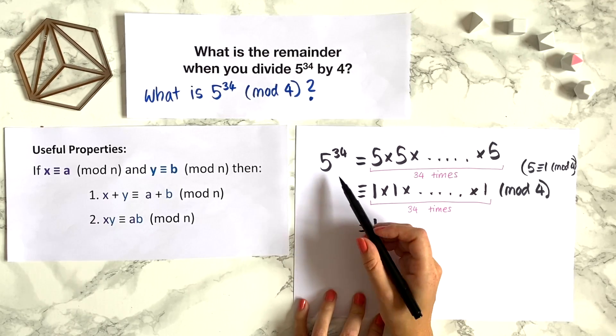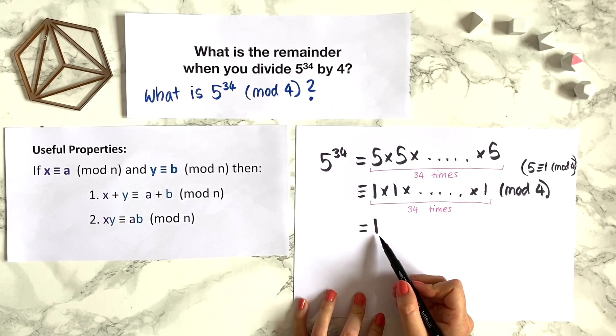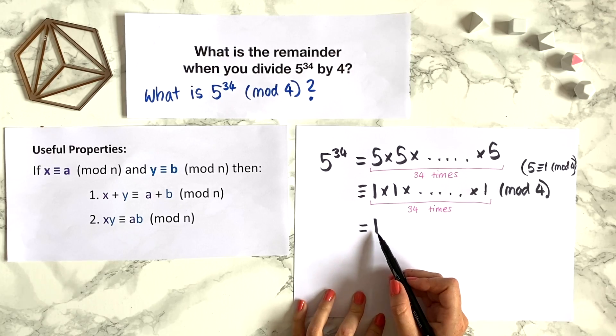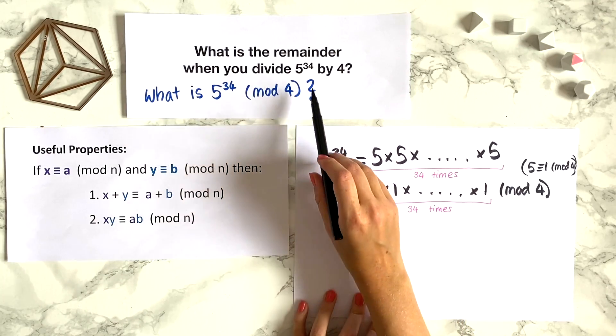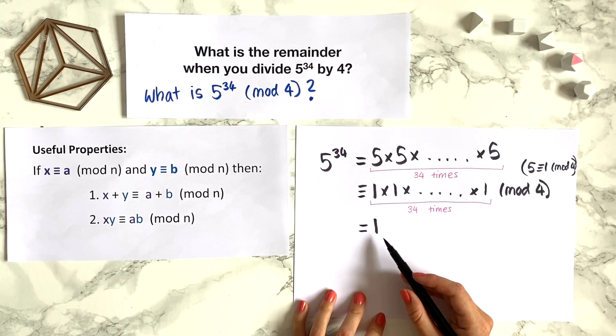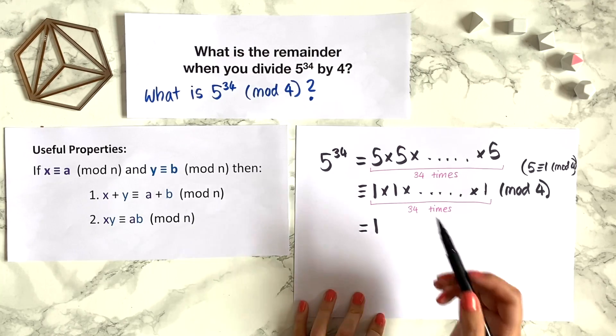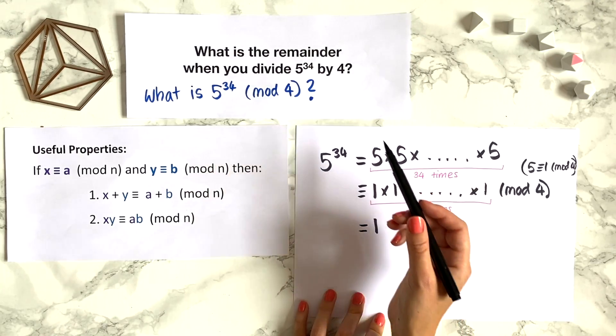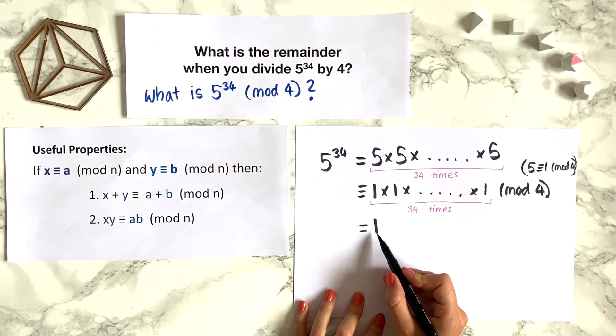So 5 to the power of 34 modulo 4 is congruent to 1, and that means that the remainder when you divide 5 to the power of 34 by 4 is just 1. So you can see that a question that looks quite intimidating is actually fairly straightforward if we apply modular arithmetic to it.